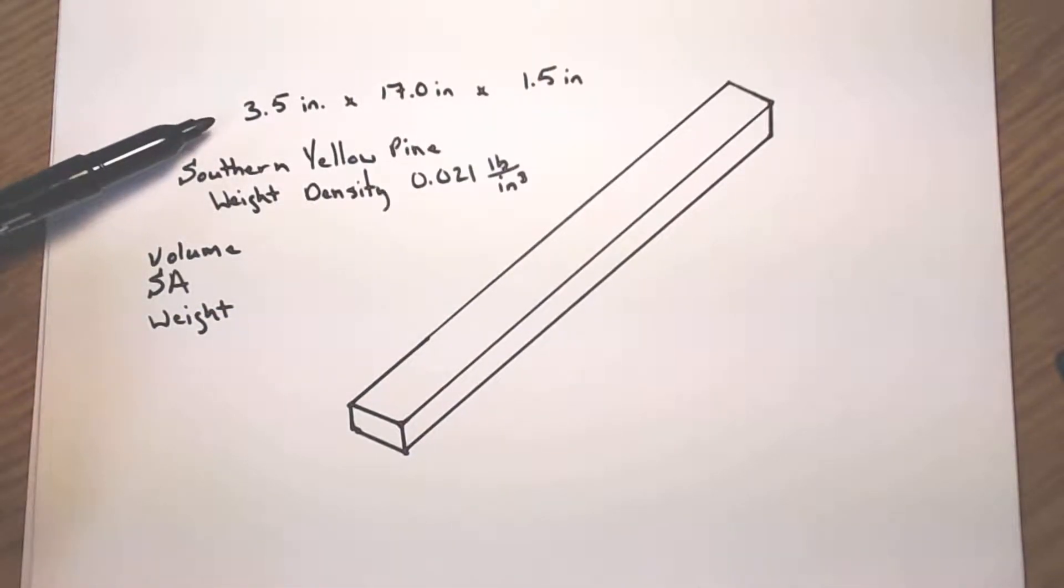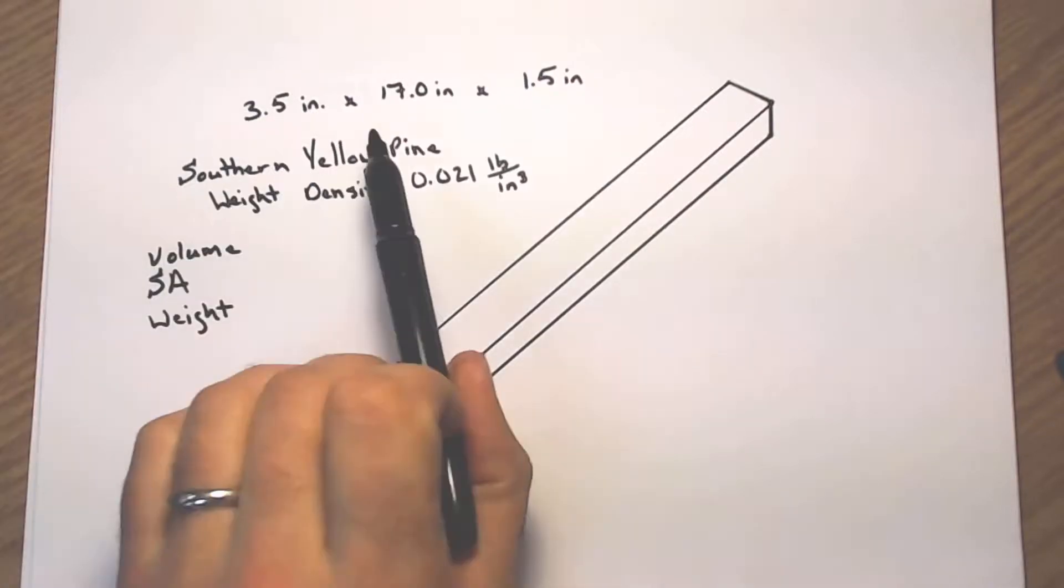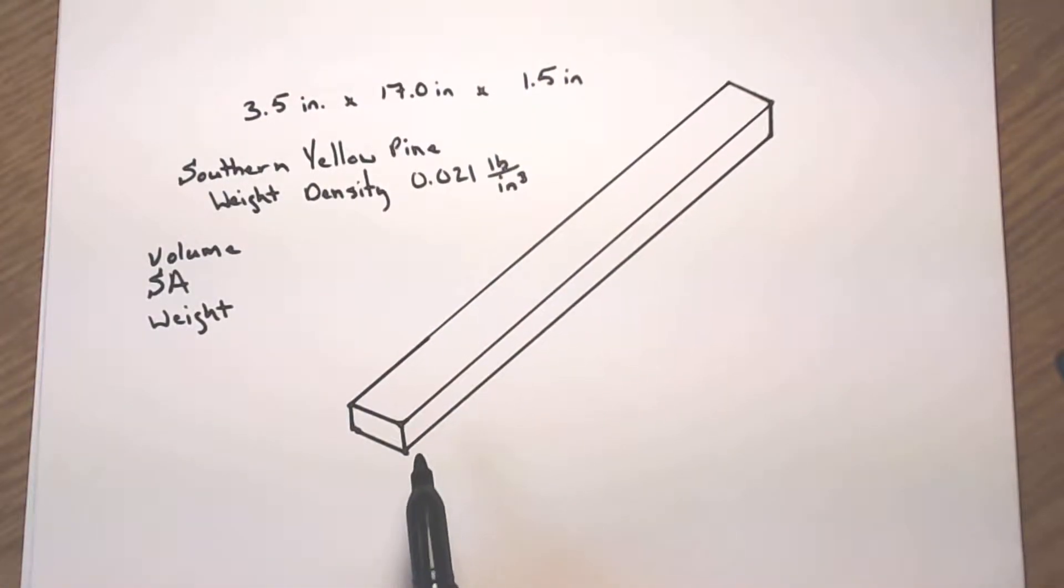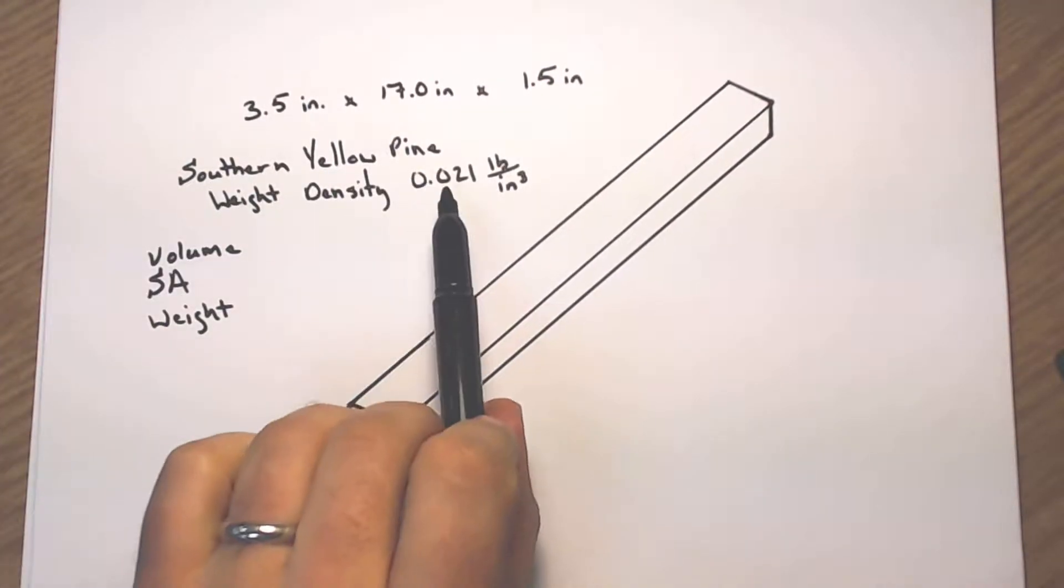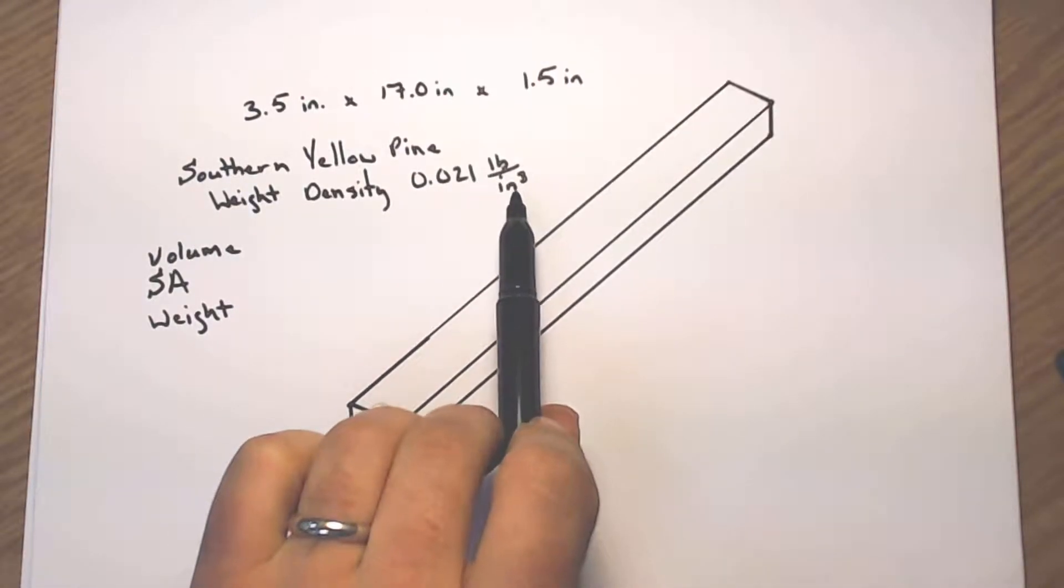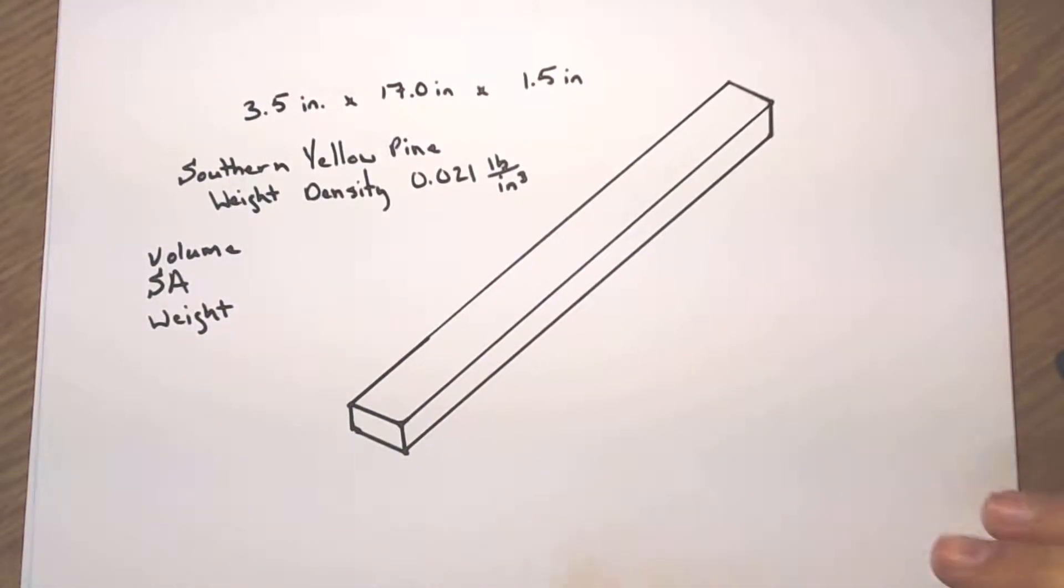It is 3.5 inches by 17 inches long and 1.5 inches tall. And we're going to consider this like it's southern yellow pine, and its weight density is 0.021 pounds per cubic inch. All right, let's get started with volume.